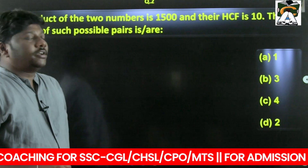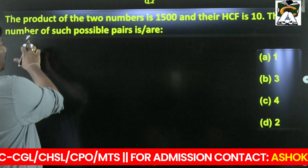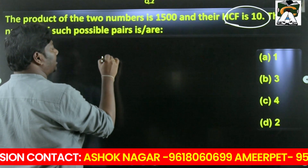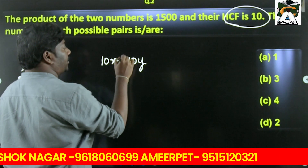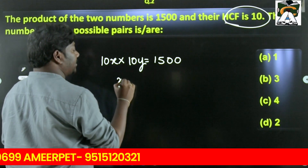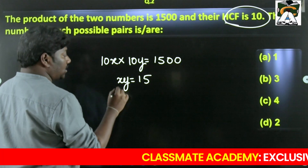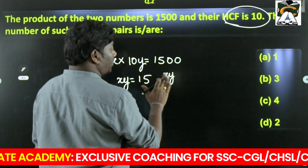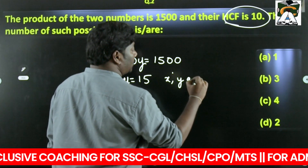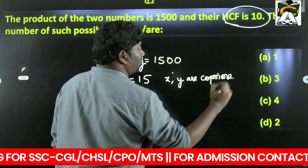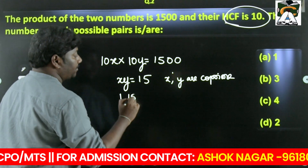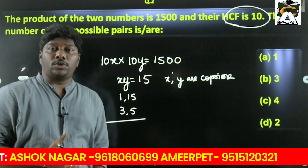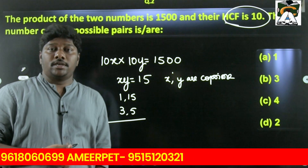Next question: the product of two numbers is 1500, their HCF is 10 — how many such possible pairs are there? When HCF is 10, take the two numbers as 10x and 10y. The product gives 10x × 10y = 1500, so x × y = 15. Now x and y must be co-prime. Possibilities are 1 × 15 and 3 × 5, so there are only two pairs possible.